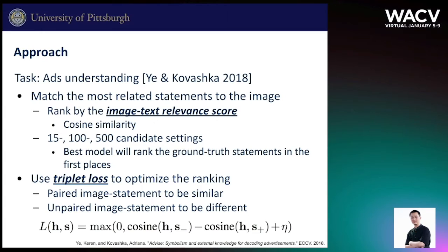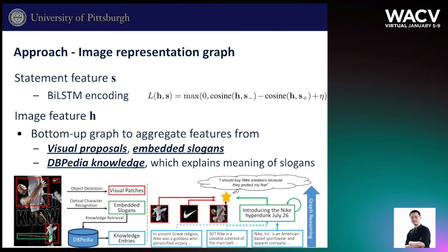We now introduce the methodology. Our task is the ads understanding task proposed in 2018, which requires matching the most related human-written statements to the image. We use triplet loss to optimize the ranking, forcing paired image-statement pairs to be similar in the feature space. We use BiLSTM to encode the text statement. For the image feature, we use a bottom-up graph to aggregate features from visual proposals, embedded slogans, and DBpedia knowledge.